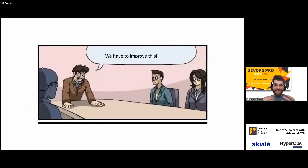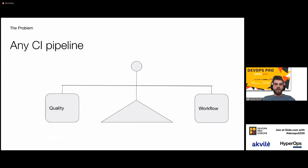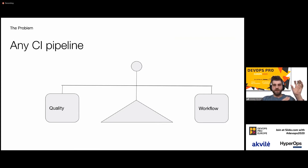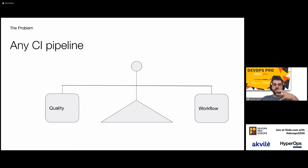So the idea at Uber a couple of years ago was to improve this. If we think about continuous integration, theoretically any CI pipeline has to balance two things: the quality of the software you're going to ship, and on the other side, the workflow you enable for your developers. Let me illustrate this with two extremes.